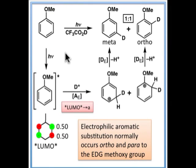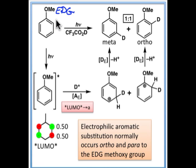We can use a similar line of reasoning to predict the case of this electrophilic aromatic substitution. Under normal conditions, the electron-donating group causes substitution to take place either at the ortho position or the para position, but under photochemical conditions, we get a one-to-one mixture at the meta position and the ortho position, and no substitution at the para position.